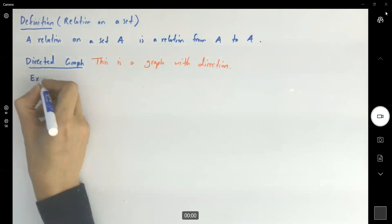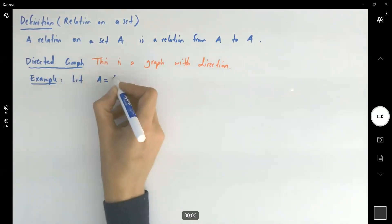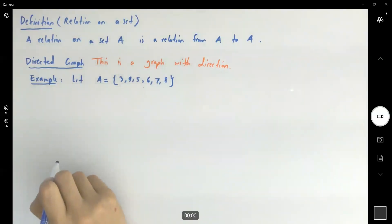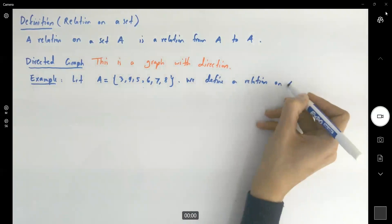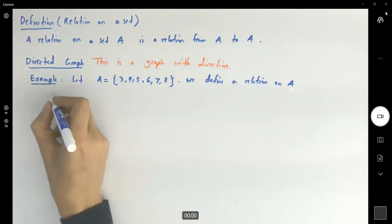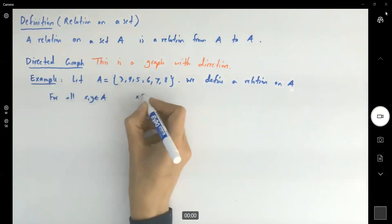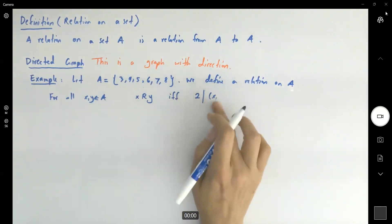Let's define this by example. In this example, I give you set A to be the set including 3, 4, 5, 6, 7 and 8. We define a relation on A as follows: for all x and y taken from the same set A, x is in relation with y if and only if 2 divides the difference x minus y.